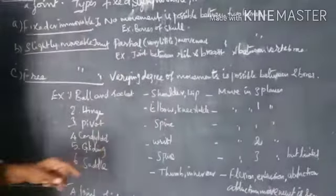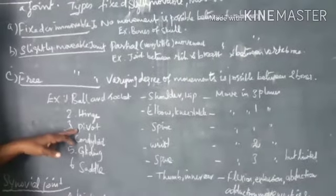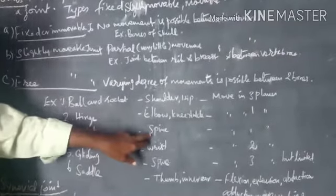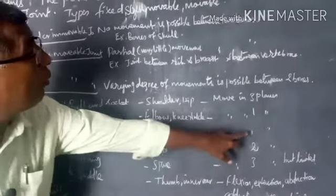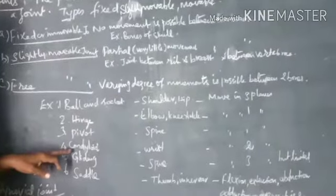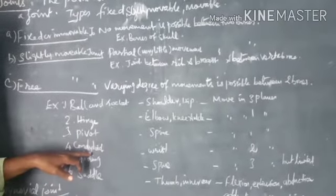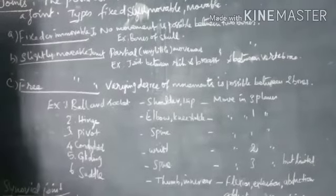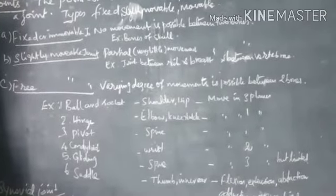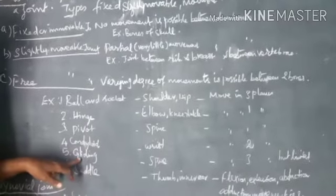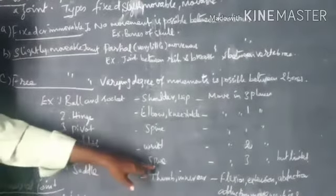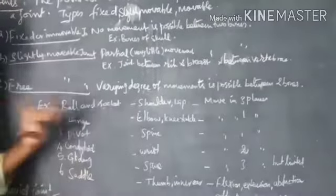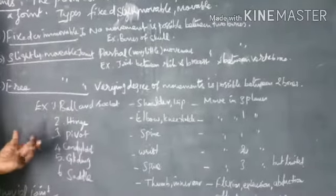Third one is pivot joint present in the spine or the vertebral column, that is also move in only one plane. Fourth one is condyloid joint that is present in the wrist, move in two planes. Fifth one is gliding joints, this is also present in the spine, move in three planes but to a limited extent.